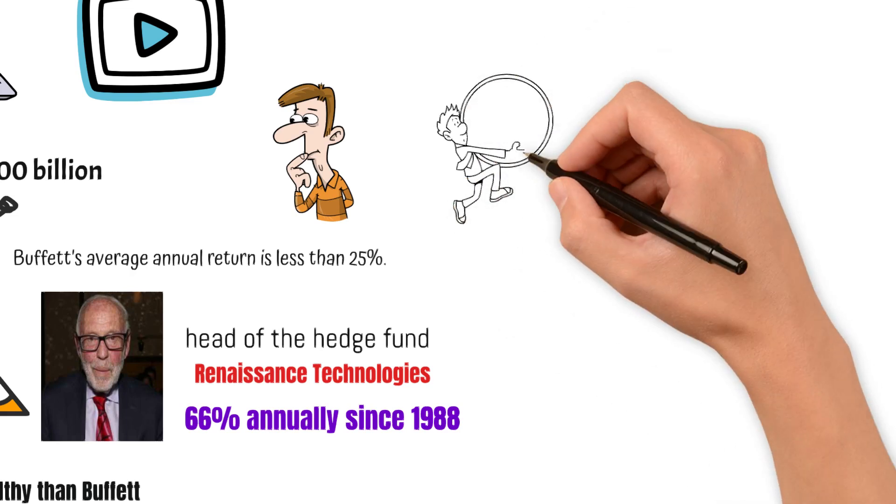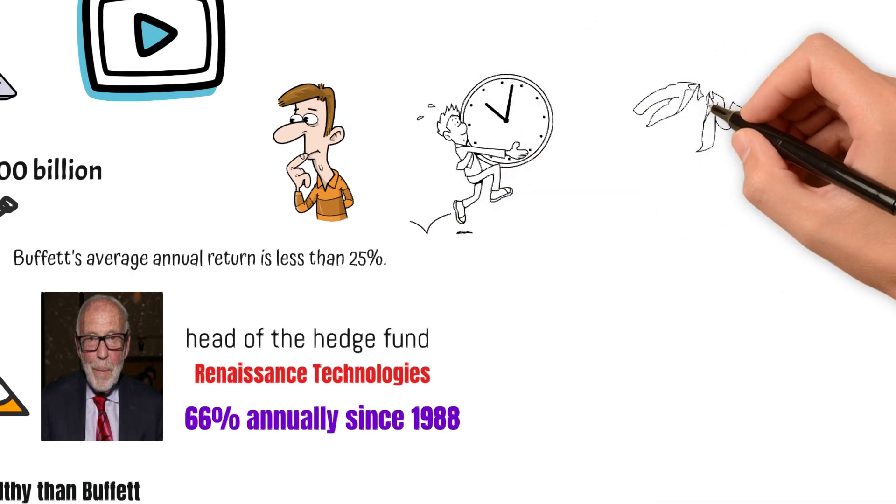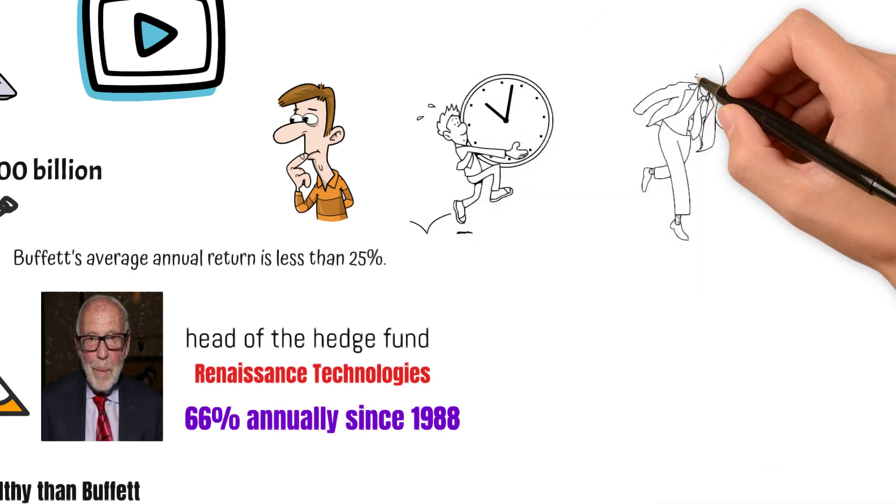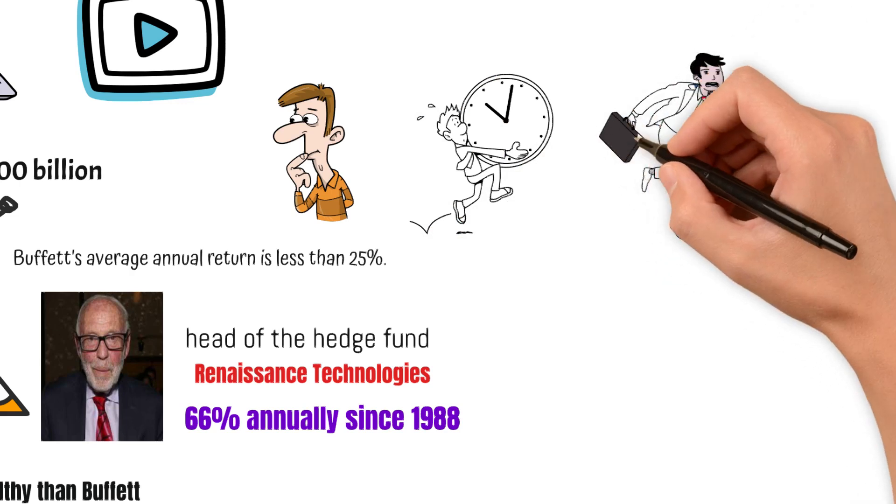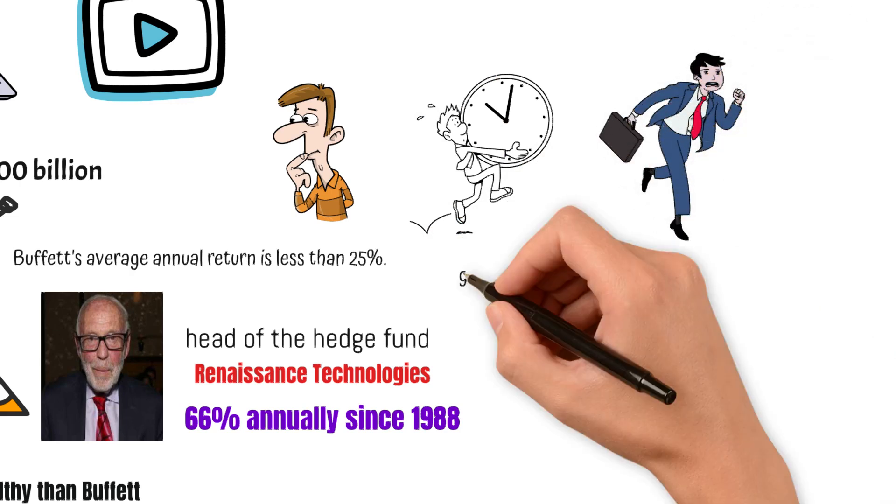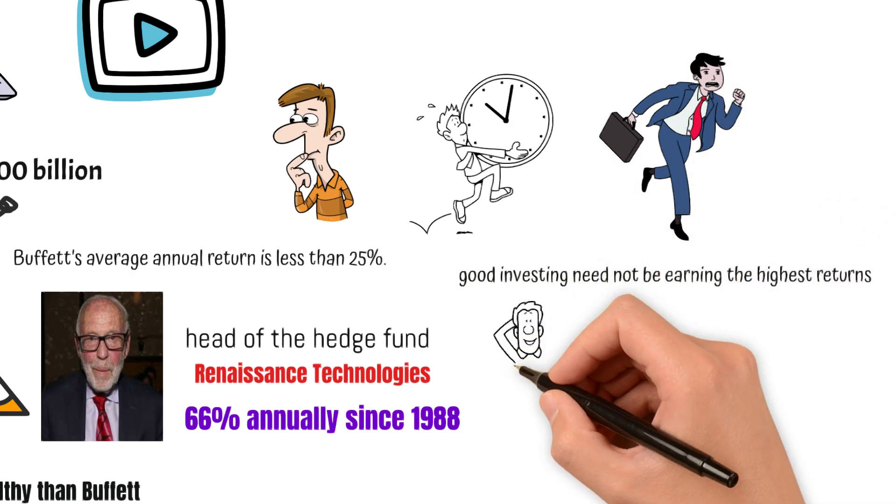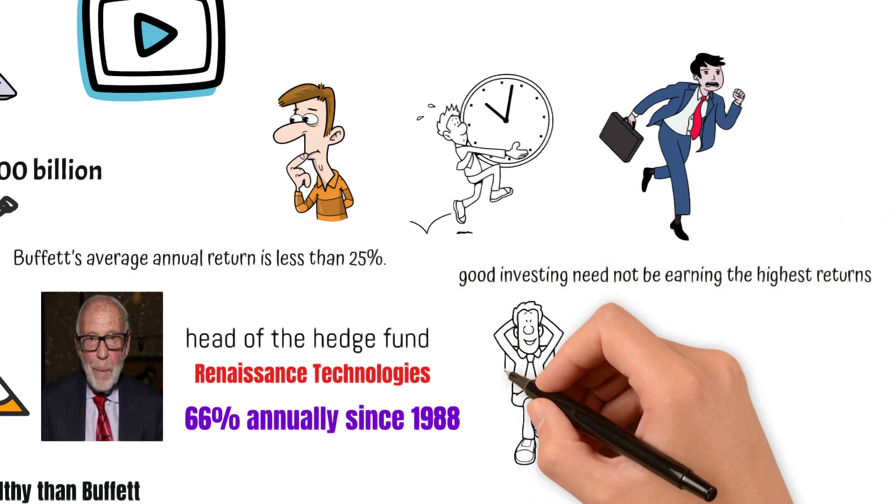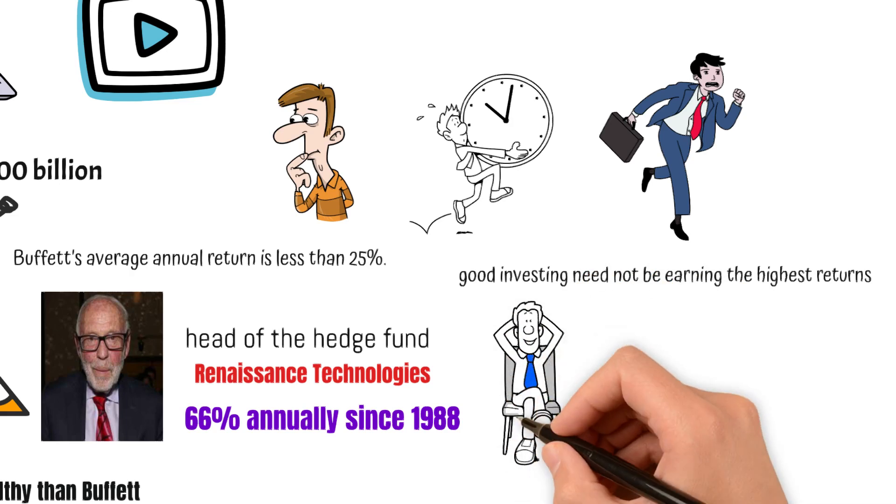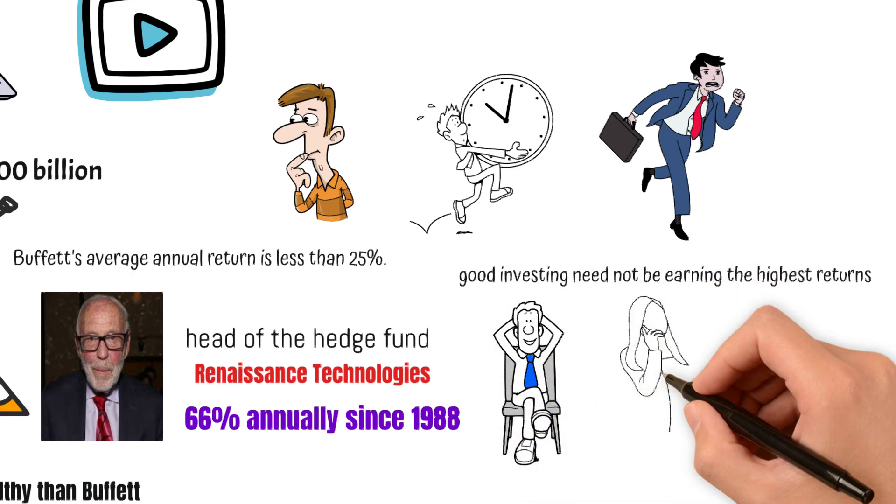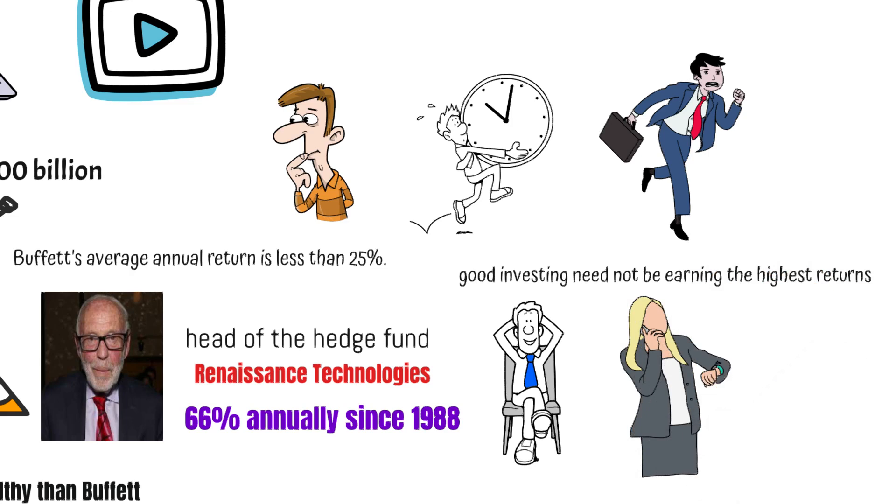The simple answer is time. Simons started his investment journey very late, and he has had less than half as many years to compound as Buffett. Therefore, good investing need not be earning the highest returns. Good investing can also be making pretty good returns and staying invested for the longest period possible. That is when time becomes your friend and brings the magic of compounding with it.